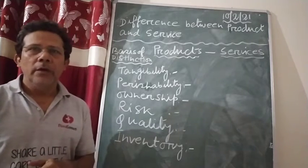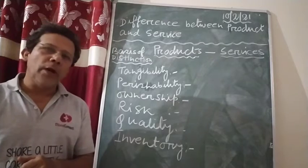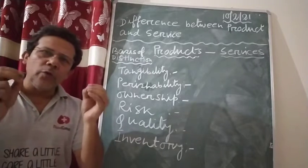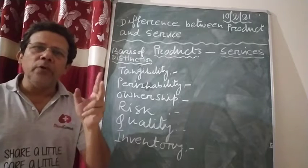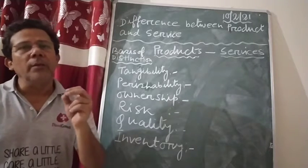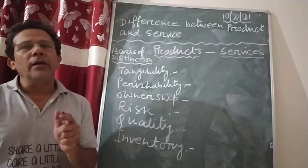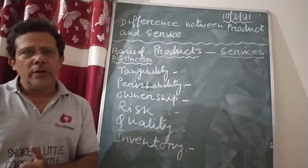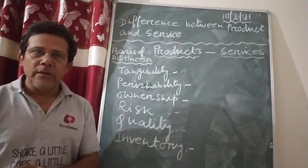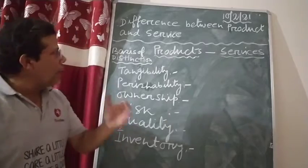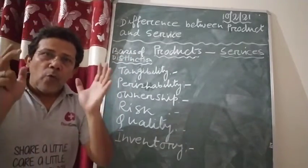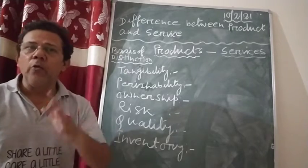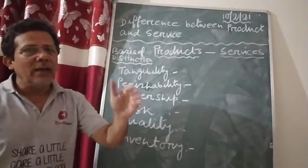In today's class, I am going to discuss the differences between product and service. From product and service, only two things are there to be learned: the meaning of product, the meaning of services, and the differences between them. Whenever you are going to write the differences, you have to write first the basis of distinctions, and it has to be in tabular form.